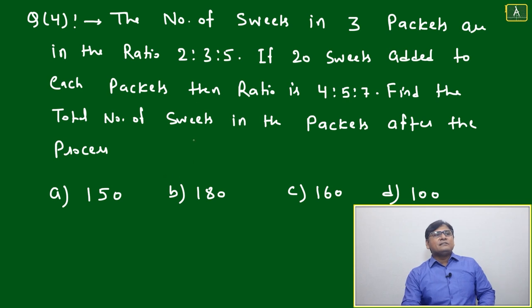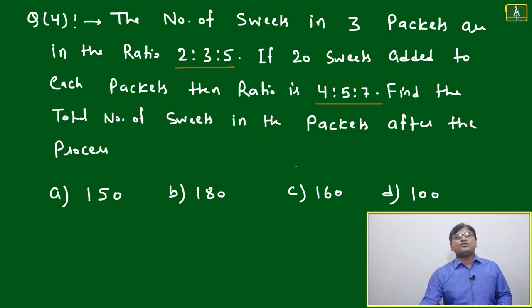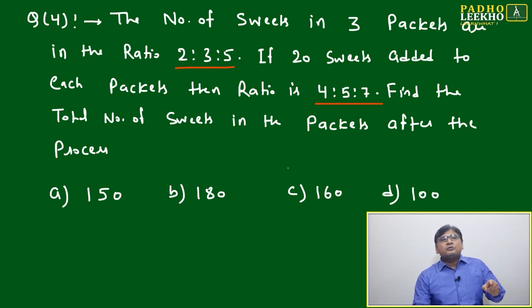Question number four: The number of suits in three packets are in the ratio 2:3:5. If 20 suits are added to each packet, then the ratio changes to 4:5:7. Find the total number of suits in the packets after the process.